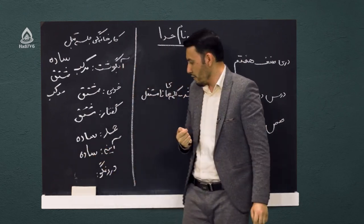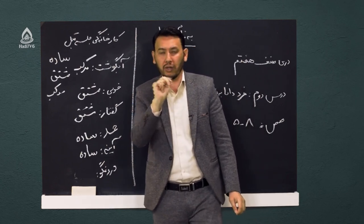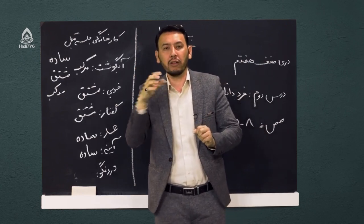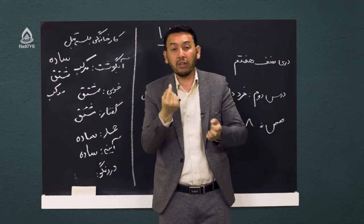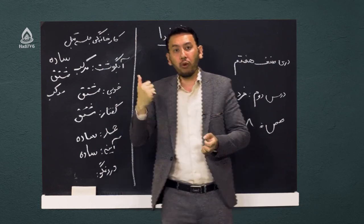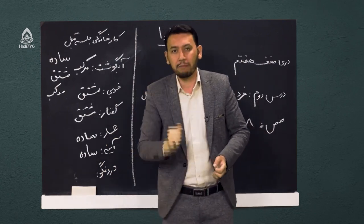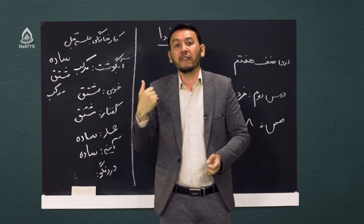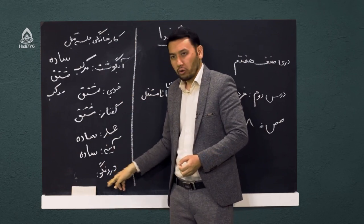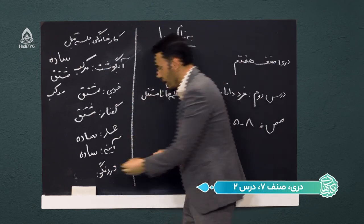و آخر دروغگو: دروغگو باز هم دو جزء دارد؛ دروغ و گو. دروغ یک کلمه است که دارای یک معنی مشخص است. گو هم دارای معنای مستقل است، از مصدر گفتن است. دروغ و گو هر دو جزء معنادار هستند، در کنار هم ترکیب شده و کلمه جدید ساخته، پس می‌شود مرکب.